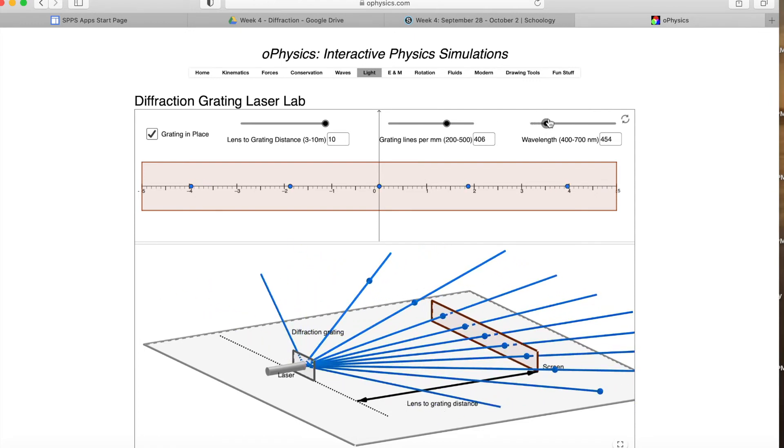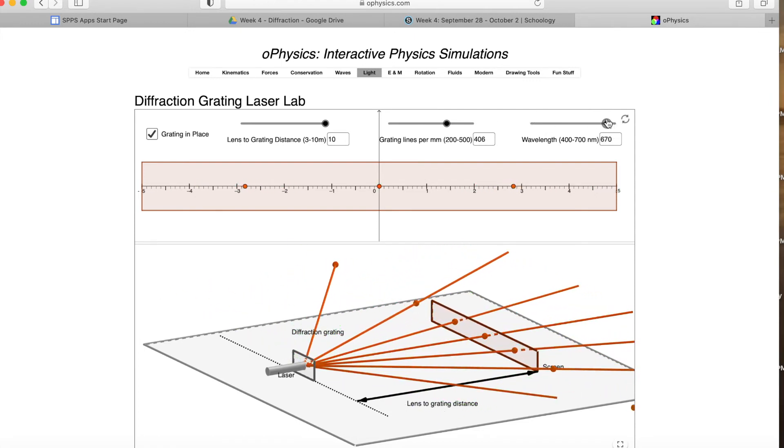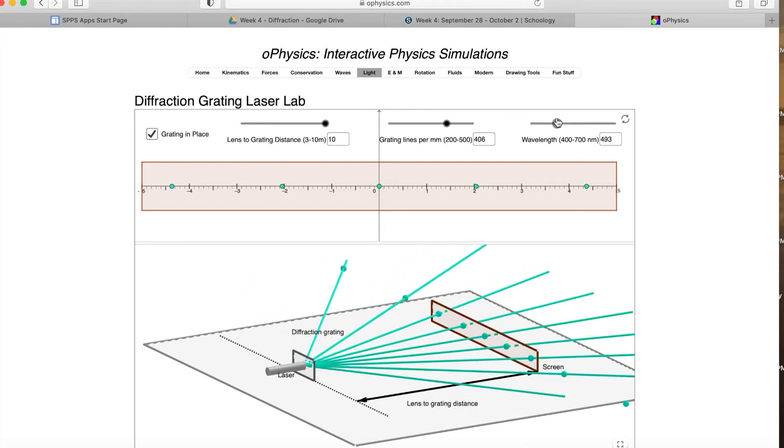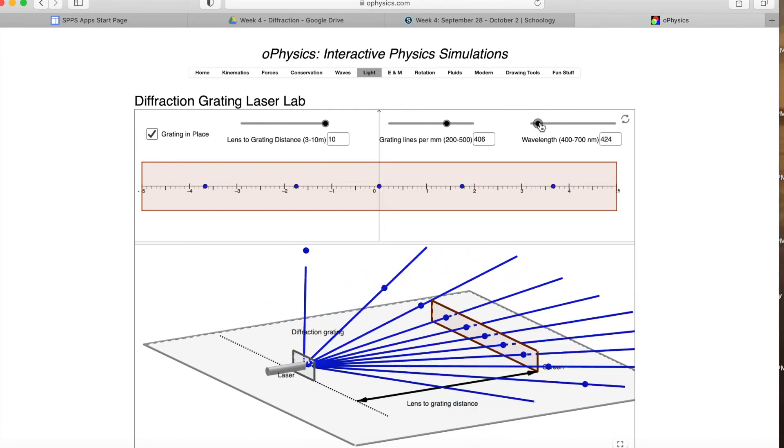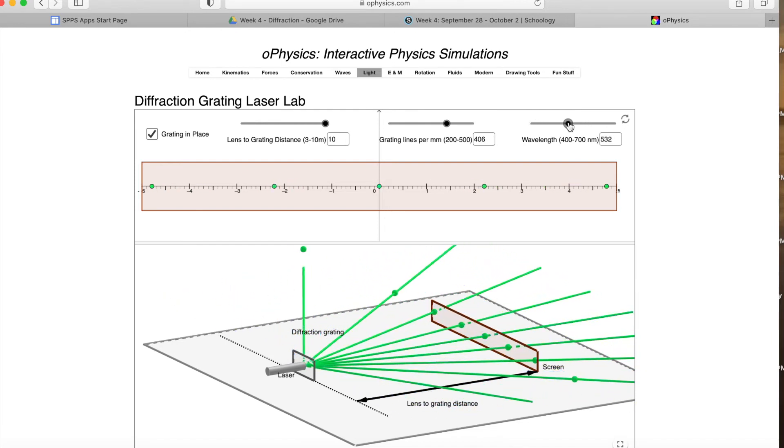And then you can change the wavelength of the wave that is being produced. This lab will walk you through sliding through some different situations, some of it conceptual, some calculating, and hopefully getting a good understanding of what's happening with the diffraction here.